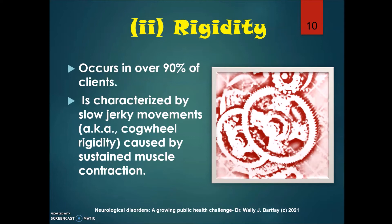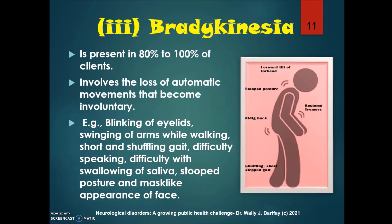Cogwheel rigidity is characterized by slow jerky movements caused by sustained muscle contraction. Bradykinesia is present in 80 to 100 percent of clients, and involves the loss of automatic movements that become involuntary — things like blinking of the eyelids, normal swinging of the arms while walking, short and shuffling gait, difficulty speaking, difficulty with swallowing of saliva, stooped posture, and a mask-like appearance of the face.